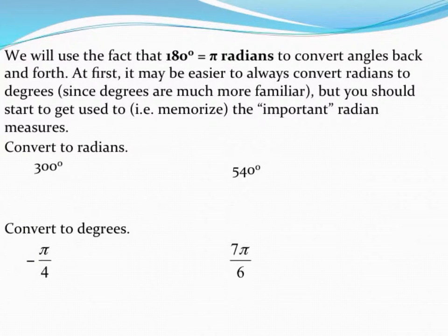I'm going to show you a quick easy way to convert degrees to radians or vice versa. The key to doing this is to remember that 180 degrees, a half circle, is equal to pi radians.